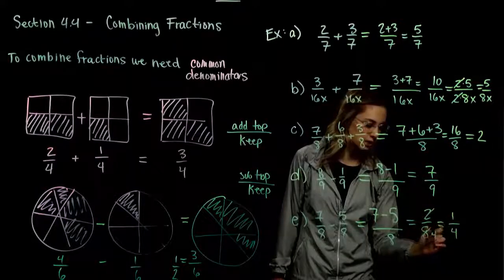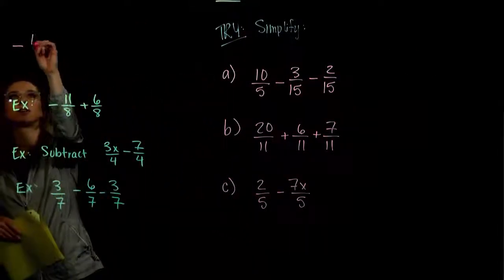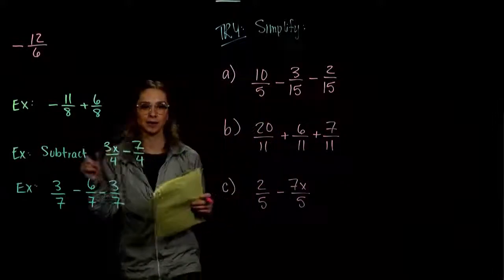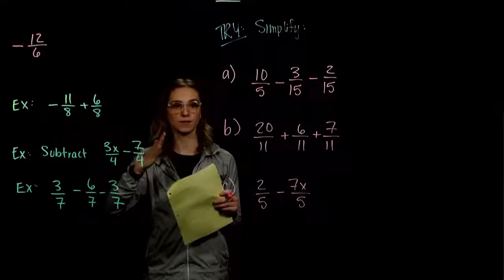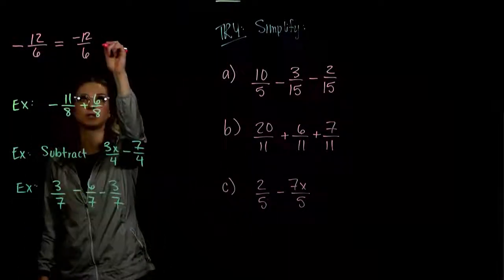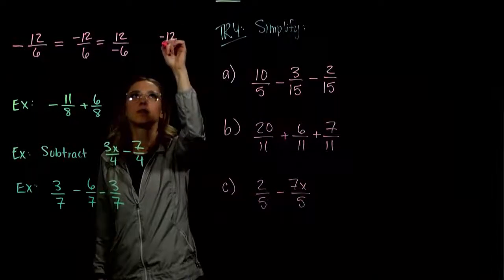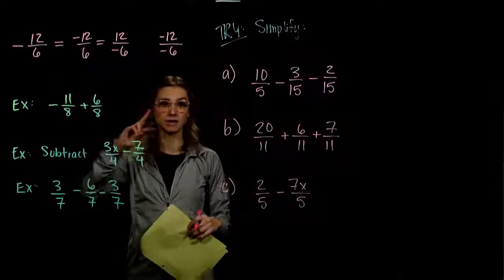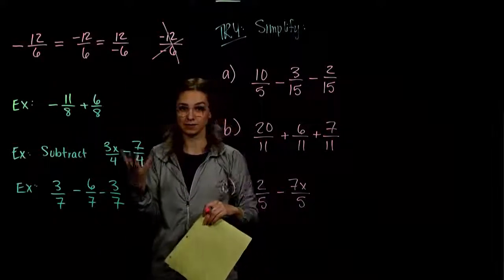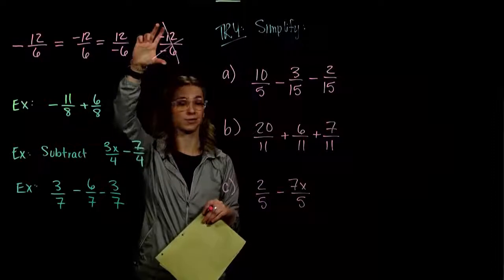When dealing with a negative fraction — for example, negative 12 over 6 — we have two options for that negative. We can either give it to the top and put it on the 12, so negative 12 over 6. Or we could give it to the bottom, making 12 positive and 6 negative. But we can't give it to both, because negative divided by negative is positive, and that changes the value. So whenever there's a negative in a fraction, we can give it to the top or to the bottom, but not both.